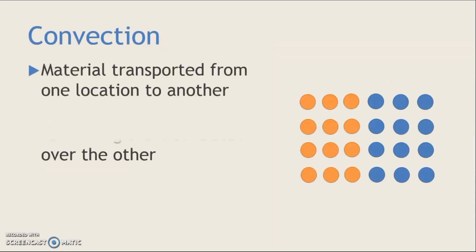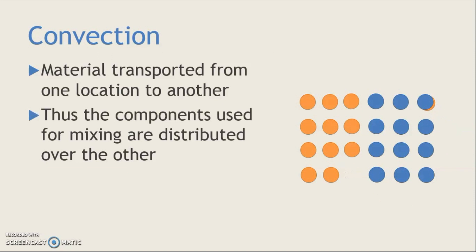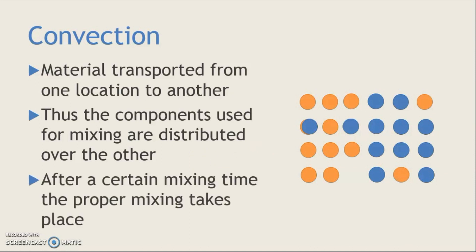In convection mixing, the components used for mixing are distributed over one another, and after a certain time, proper mixing of the ingredients takes place. This type of mechanism is called convection mixing.